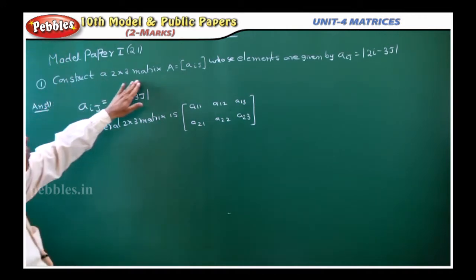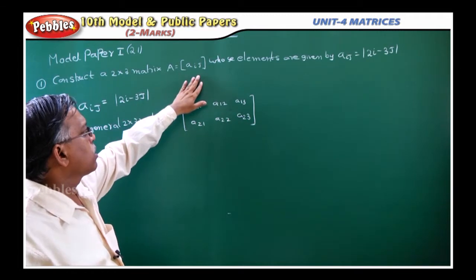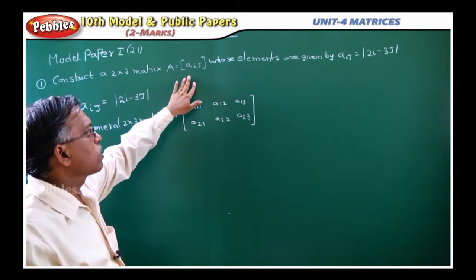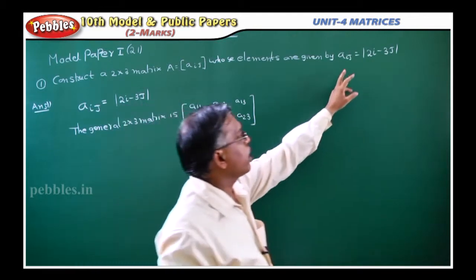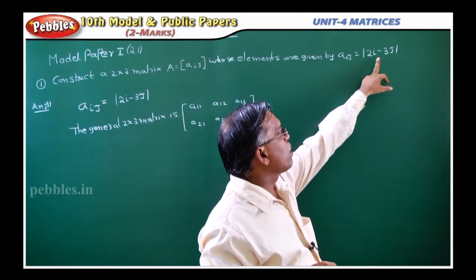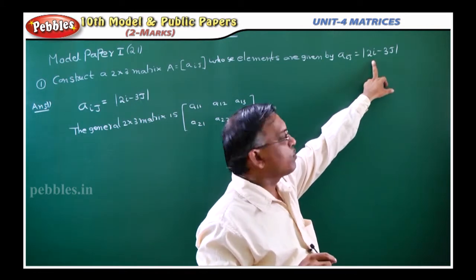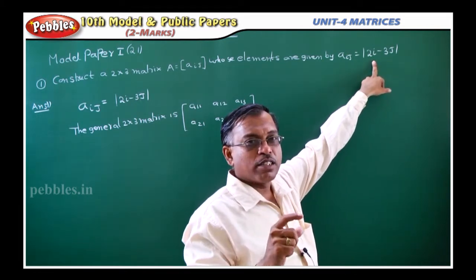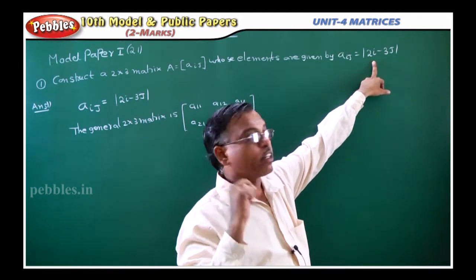Construct a 2 by 3 matrix A, equal to A_ij. That means, the representation of the matrix whose elements are given by A_ij is equal to modulus of 2i minus 3j. Using this definition, all the elements of the given 2 by 3 matrix you have to find out.